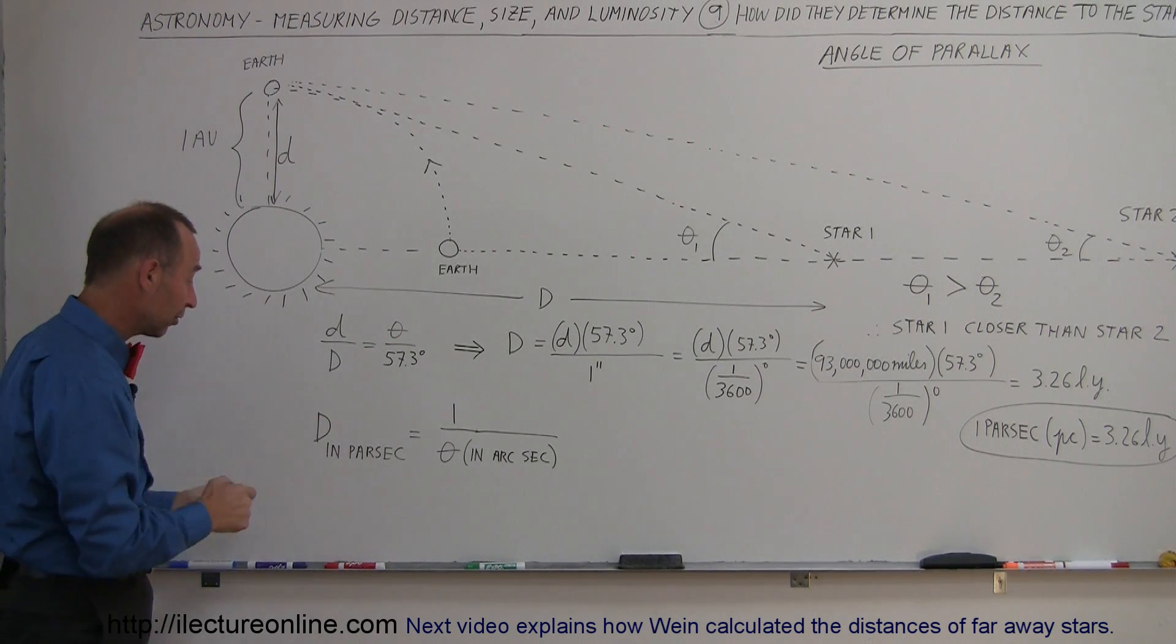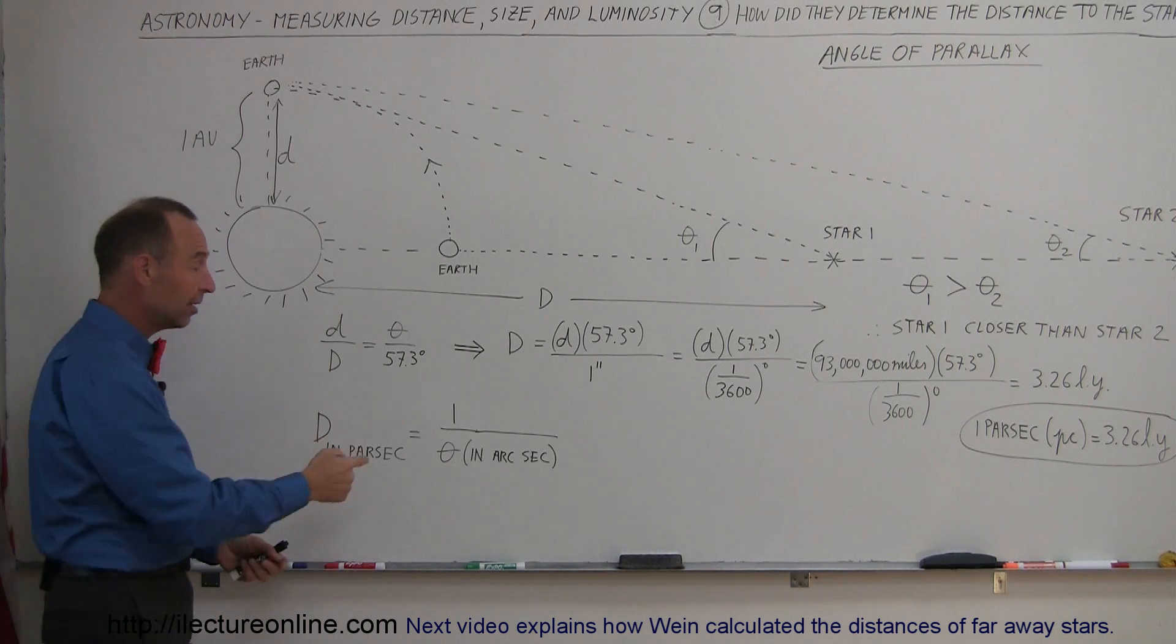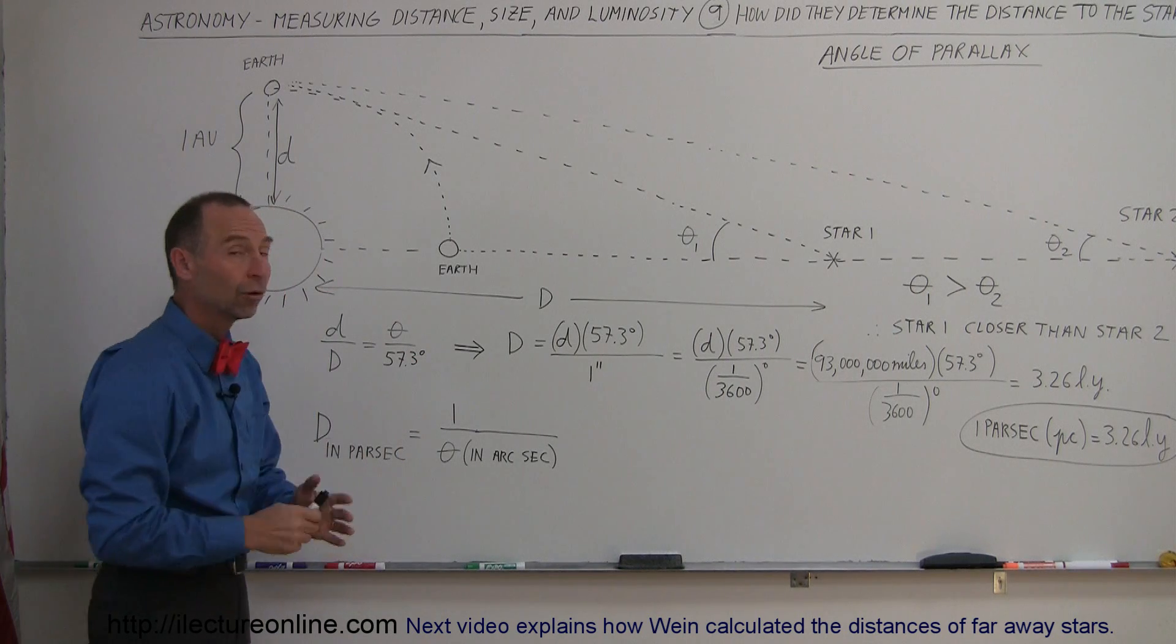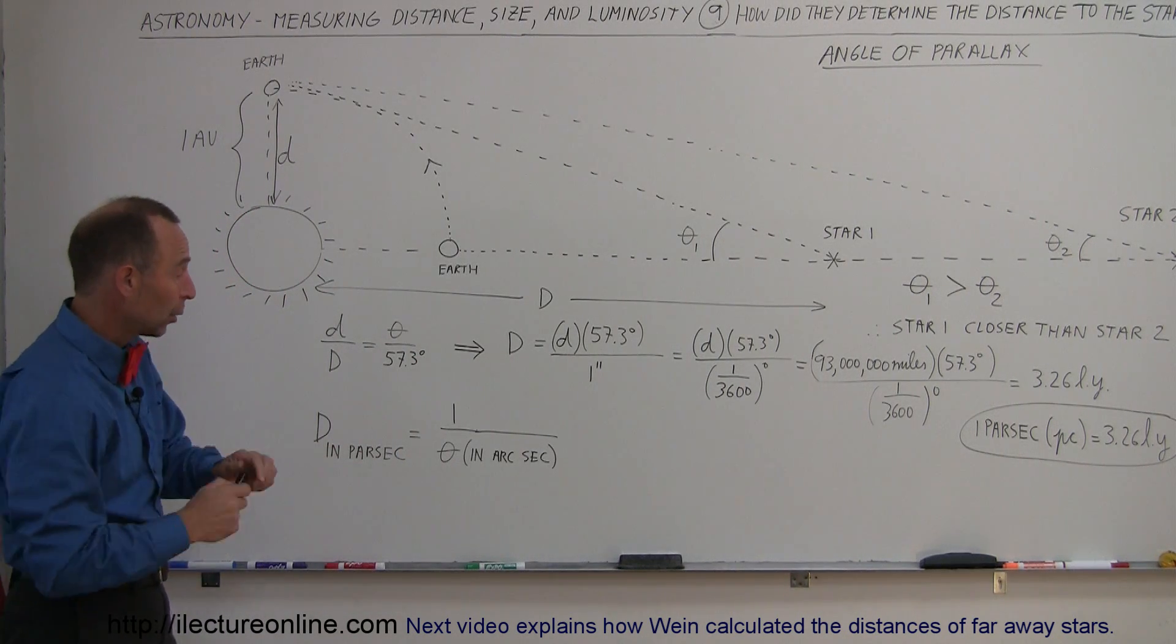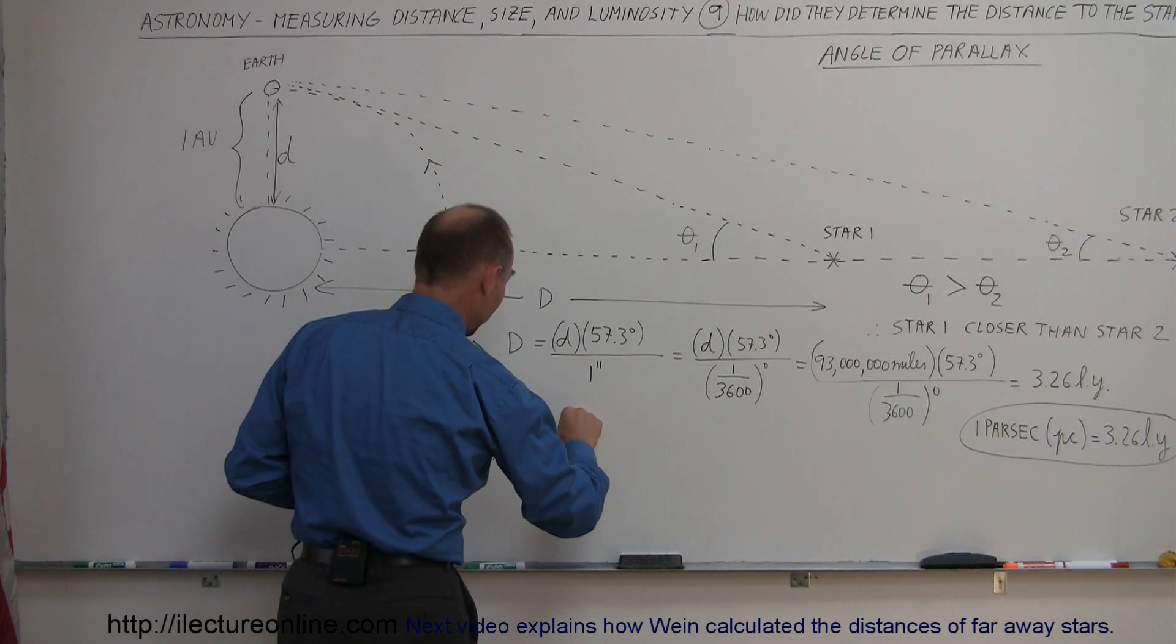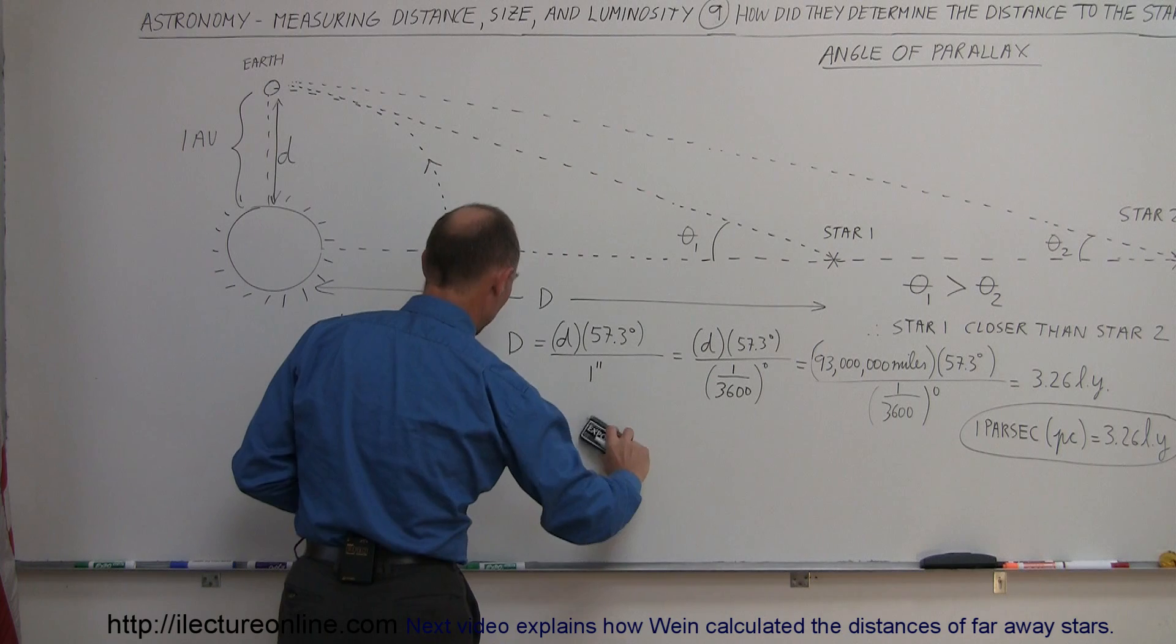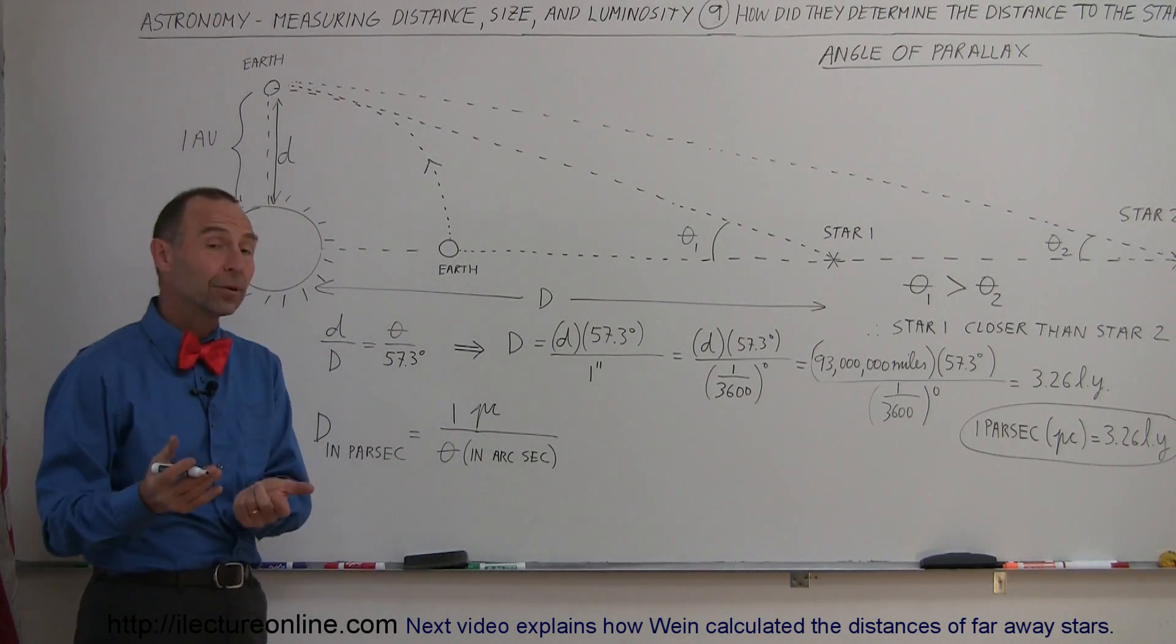So the way the distance formula now works is that the distance in parsecs to any star is equal to 1 divided by the angle in arcseconds. So for example, if the angle in arcseconds is - and this would be in parsecs - so that would be in parsecs, and I guess we write parsecs as PC, so 1 PC divided by the angle in arcseconds.